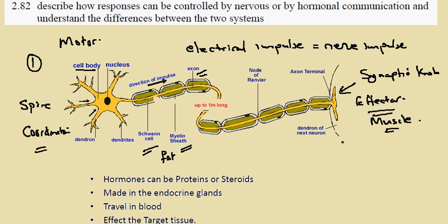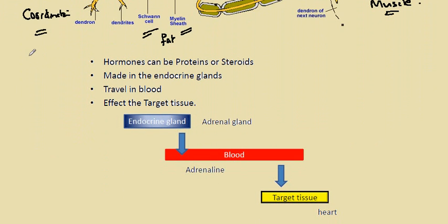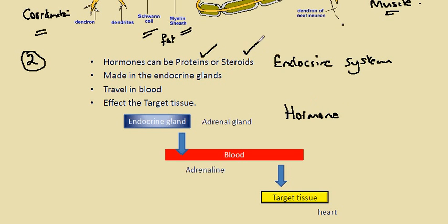The second way, shown here theoretically, is known as the endocrine system. This involves what is known as an endocrine gland, which produces a chemical known as a hormone. As you can see here, hormones can be proteins or steroids. There are different kinds, and they are produced and manufactured inside endocrine glands.